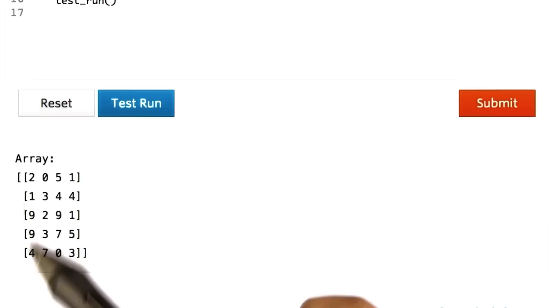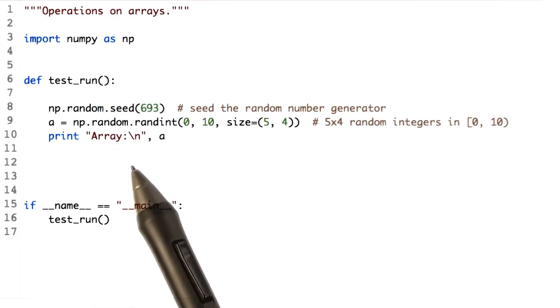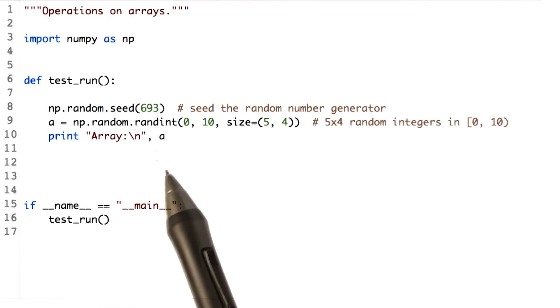So here's an array with five rows, four columns, and all the values between the range 0 and 10. Note how we used seed to set the random number generator with a constant to get the same sequence of numbers every time.